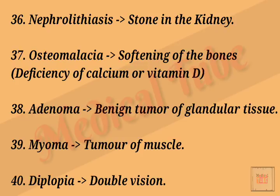Number thirty-seven: osteomalacia means softening of the bone. Number thirty-eight: adenoma means benign tumor of glandular tissue. Number thirty-nine: myoma means tumor of muscle. Number forty: diplopia means double vision.